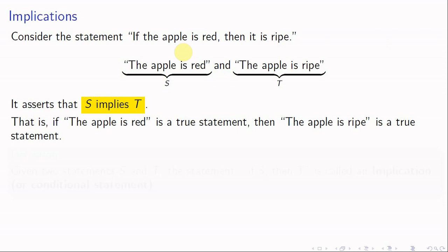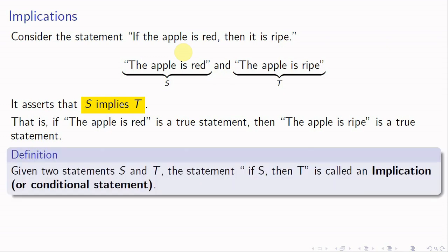The formal definition: given two statements S and T, the statement of the form 'if S then T' is called an implication, or it is also called a conditional statement.